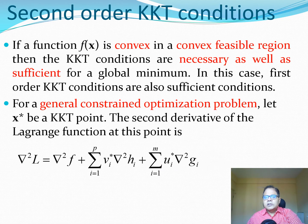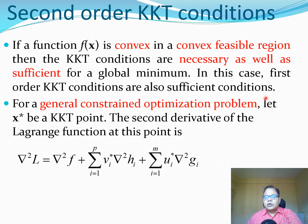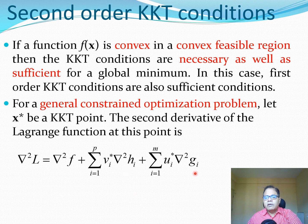Now we come to where convexity becomes useful in terms of the KKT conditions. If f(x) is convex on a convex feasible region, then the KKT conditions are necessary as well as sufficient for a global minimum — the first-order KKT conditions are also sufficient conditions. For a general constrained optimization problem, let x* be a KKT point. We can take the second derivative of the Lagrangian function, which gives us the second derivative of f, the second derivative of the constraint h, and the second derivative of constraint g, where v and u are the Lagrange multipliers.